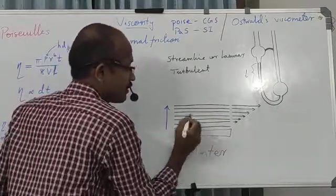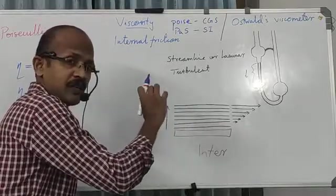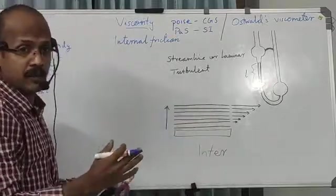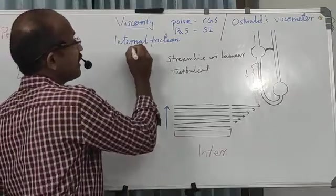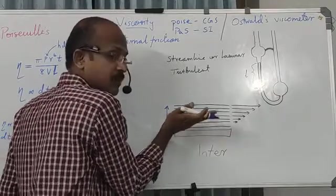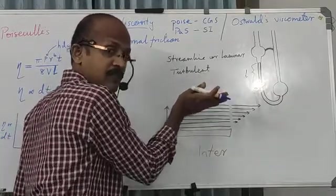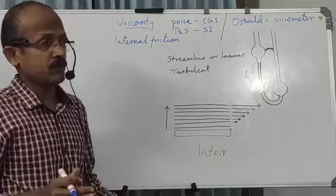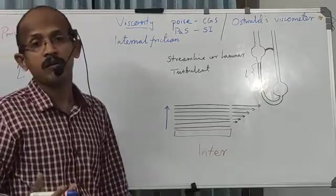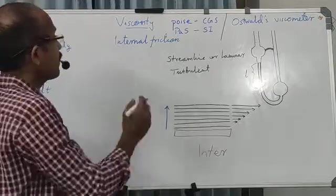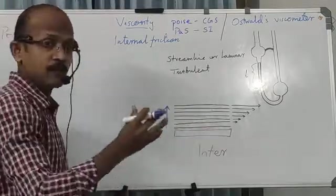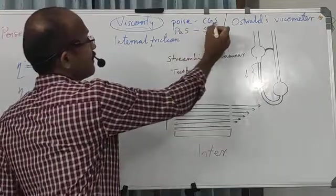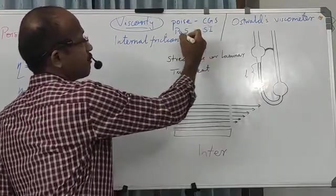This reluctance to flow of each layer is due to intermolecular attraction between particles. We can call it internal friction — the movement of one layer is resisted by friction from another layer. The reason for this friction is attraction between molecules, which may be hydrogen bonding or van der Waals interactions. That property — the reluctance to flow — is called the viscosity of a liquid. The unit of viscosity in the CGS system is poise, and in the SI system it is Pascal second.